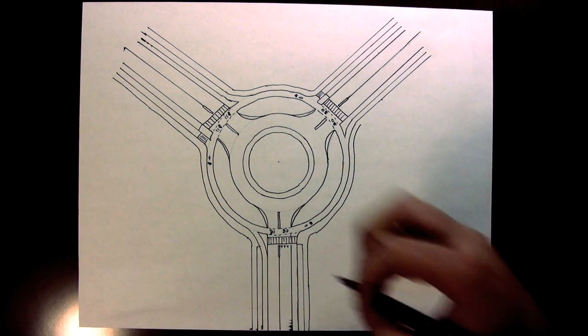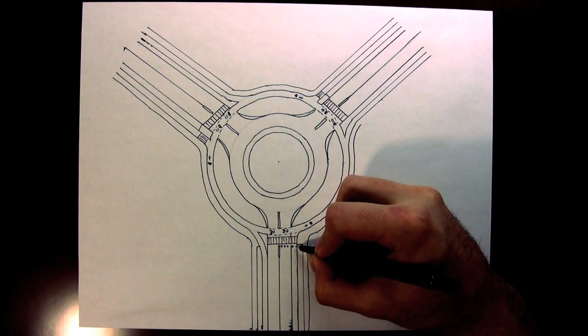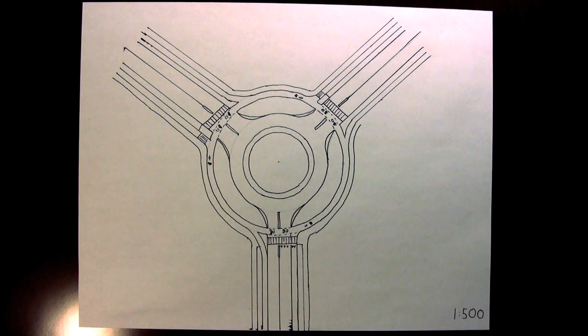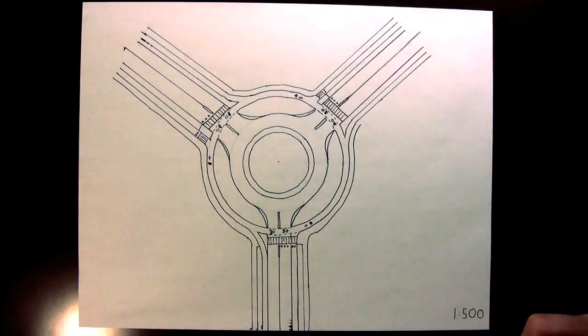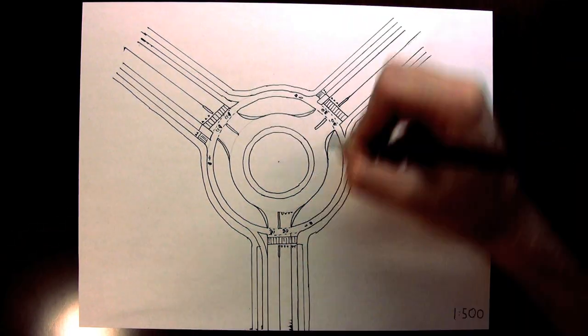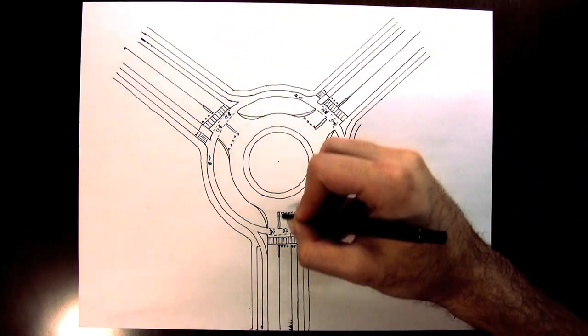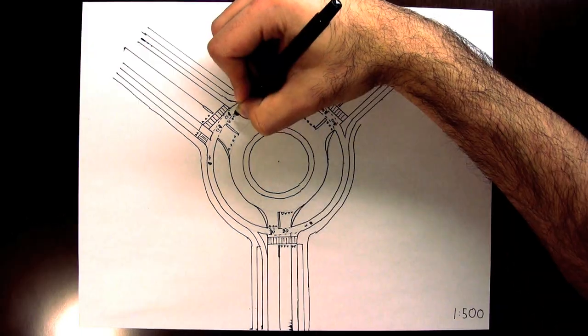Crossing pedestrians and bicycles when entering. Turning onto the circular roadway. And crossing pedestrians and bicycles when exiting.